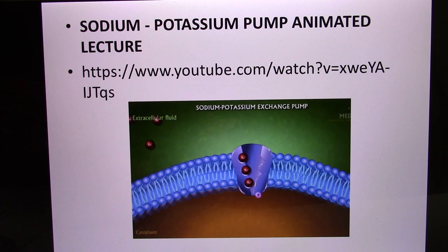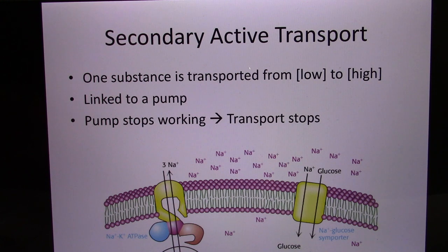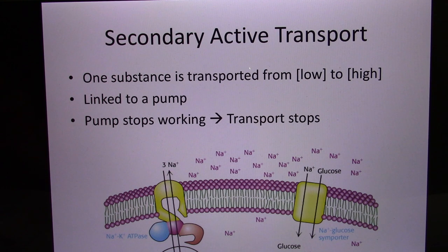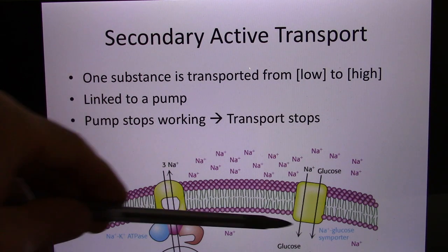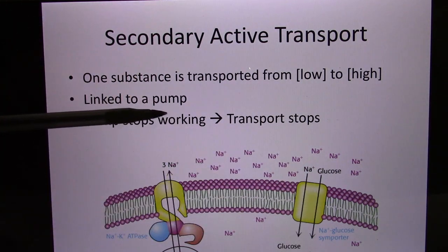The sodium-potassium pump uses ATP as an energy source and pumps sodium and potassium against the concentration gradient. The previous two examples are primary active transport. Now let's look at secondary transport — like the sodium-glucose symporter. It still moves glucose from low to high, working against the concentration gradient.